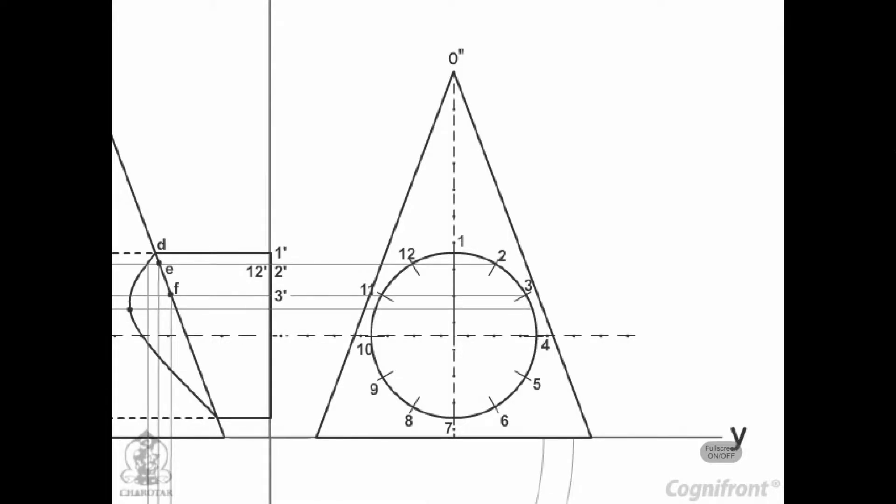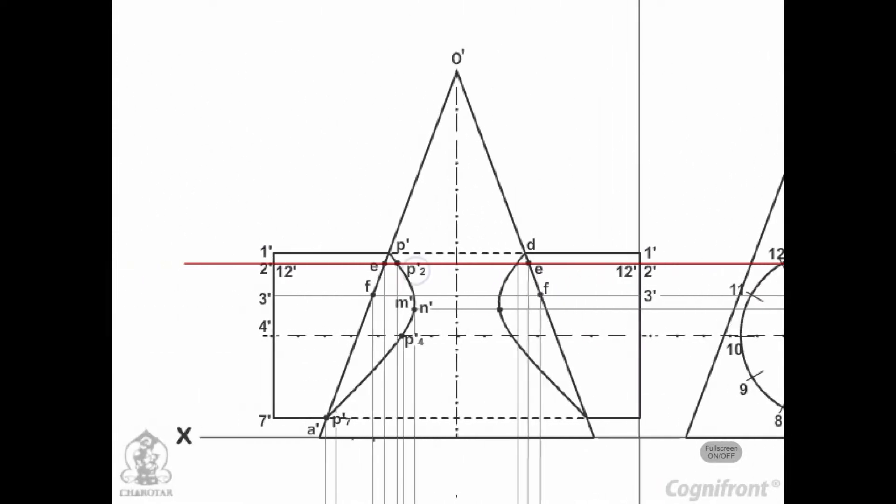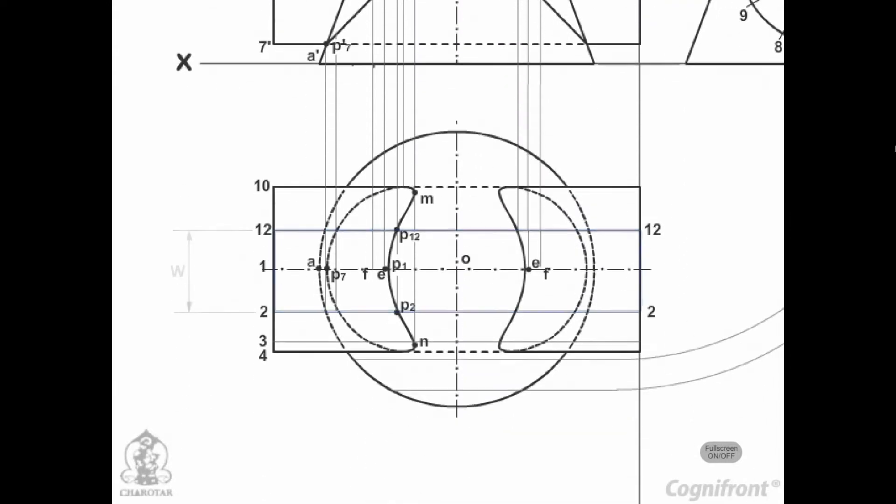Assume a horizontal cutting plane passing through, say, point 2. The section of the cylinder will be a rectangle of width W, while that of the cone will be a circle of diameter EE.